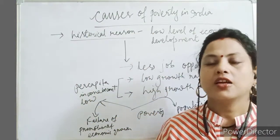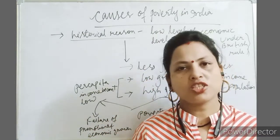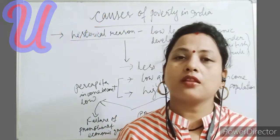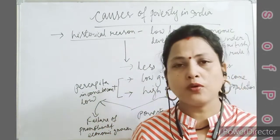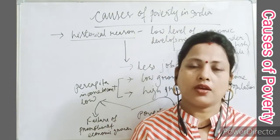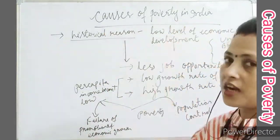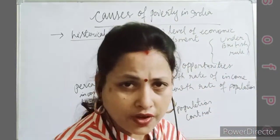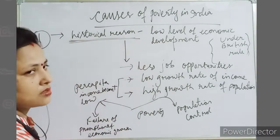Good morning. Today I will discuss Unit 5, in which we will be discussing the most important part of this chapter — causes of poverty. You can see in my board that I have already written: causes of poverty in India. Now let us discuss the first reason. The first reason is called the historical reason.